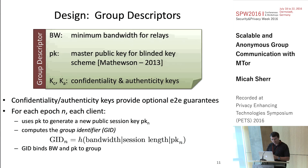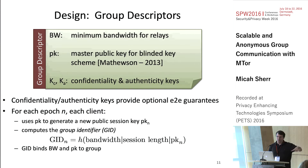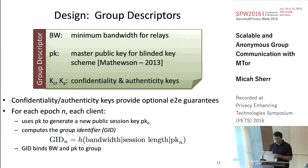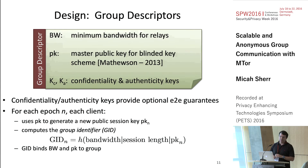Confidential authenticity keys can be used to provide optional end-to-end guarantees — a layer of encryption on top so no one outside your group can read messages. In each epoch, each client uses the master public key to generate a new public session key and compute a group identifier, which is a hash of the bandwidth, session length, and subordinate public key. The group identifier ties the public key to a particular group and prevents forgery attacks.